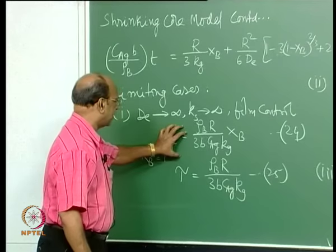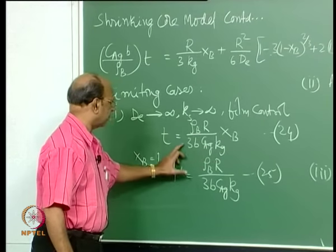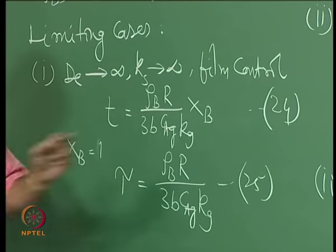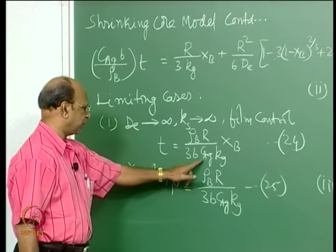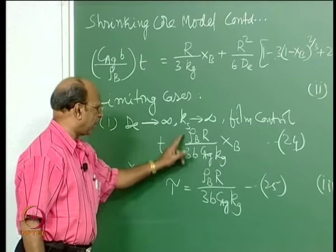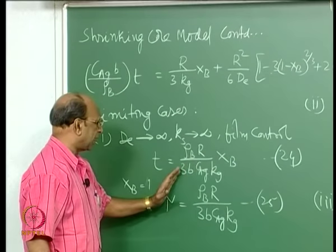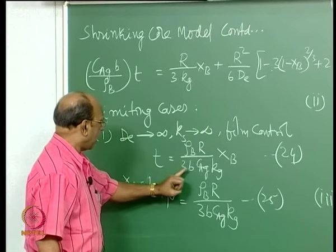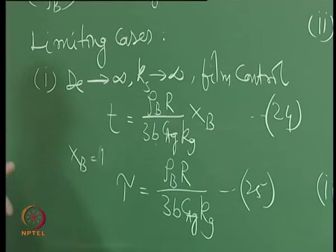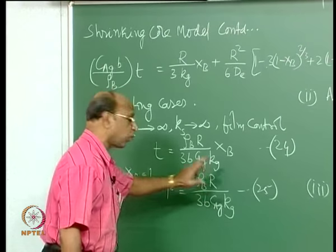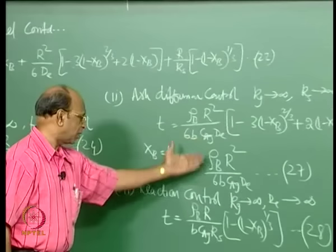For the film control equation, this is essentially y = m*x through the origin with no intercept. Keeping temperature constant and taking one particle size, R and C_AG at that temperature and pressure are known, so the entire coefficient is the slope. If X_B plotted against time gives a straight line through the origin, then from the slope you can calculate K_G.